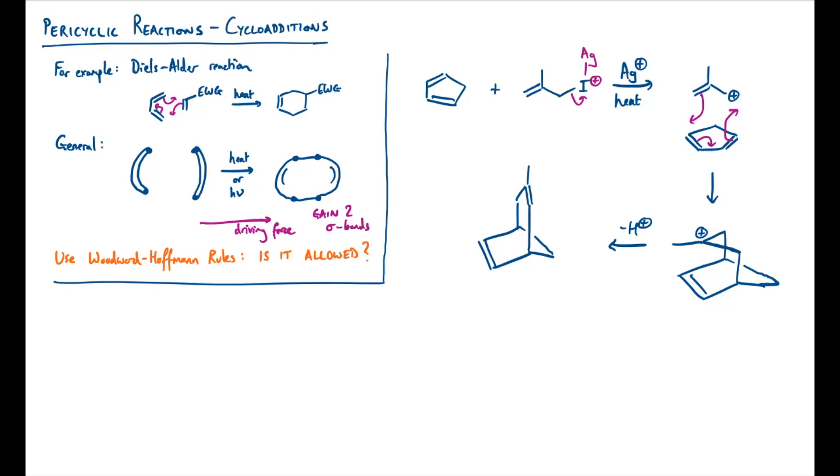To analyze this system, I need to focus on the cycloaddition step here and identify the pi systems involved. I have one pi system on the bottom and one pi system coming from the top. I'll give myself a 3D diagram in the bottom left-hand corner so that I can use the Woodward-Hoffman rules. There's my cyclopentadiene, and I'm going to form some bonds with these dotted lines with the allyl cation at the top.